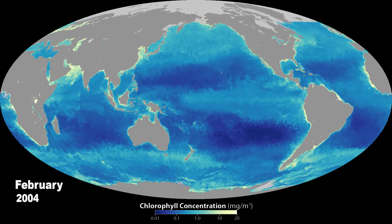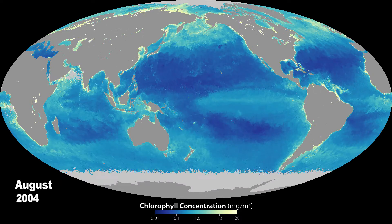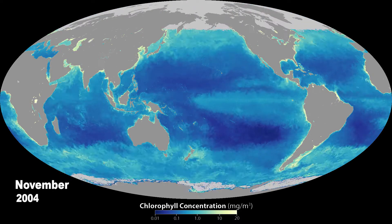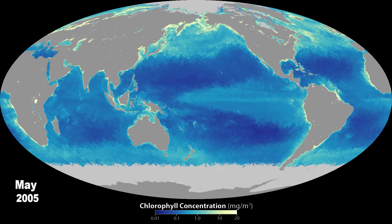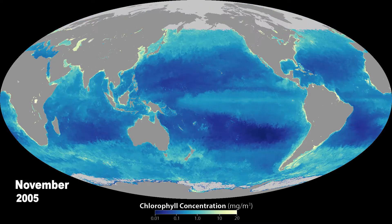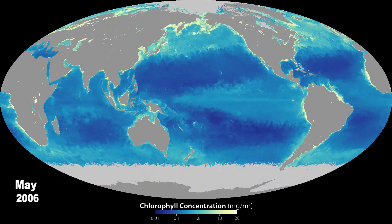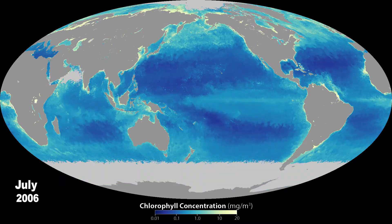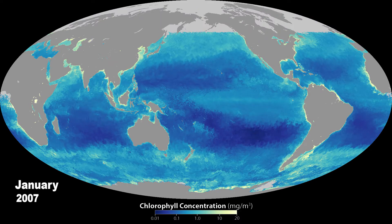We can do this because their green pigment, chlorophyll, changes the colour of the water. These monthly maps show chlorophyll concentrations. Dark blue areas have less phytoplankton and yellow areas have much more.